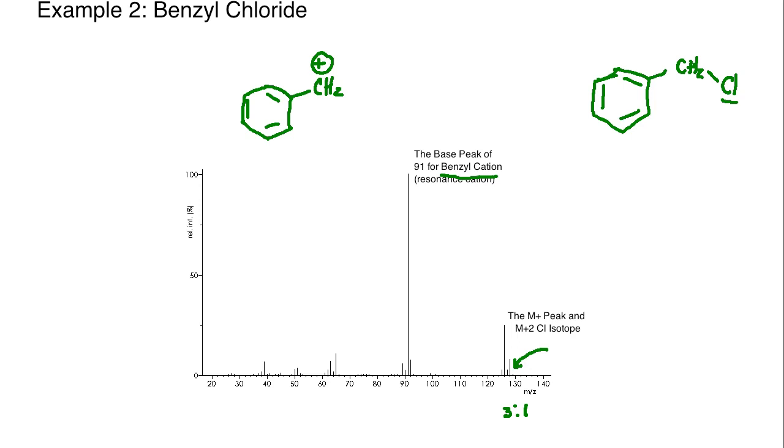When you have something that looks like this, you are going to get fantastic stability of that cation around the aromatic ring through delocalization of the charge. The point here is that sometimes, this is at 91 m/z, sometimes you have characteristic peaks that show up at certain m/z fragments, and you know that that's a very iconic or classic type of peak due to stability.